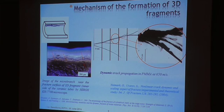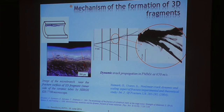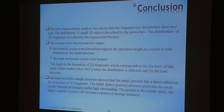In conclusion, the tubular fragmentation analysis has shown that the fragment size distribution has two parts: the distribution of smaller 3D fragments described by the power law, and the distribution of the two-dimensional fragments described by the exponential function. The ceramic tube fracture has two stages: vertical cracks were formed throughout the specimen's height as a result of tube extension in the radial direction, then the main horizontal cracks were formed. This led to the formation of two-dimensional fragmentation which corresponds to the fracture of thin shells when the distribution is affected only by the load intensity.